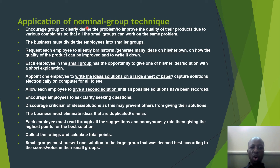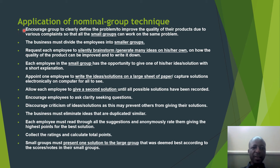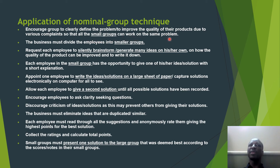The last technique is nominal group technique. Let's look at its application — how to use nominal group technique when intending to solve a problem. Step number one: encourage the group to clearly define the problem and how to improve the quality of their products due to various complaints, so that all small groups can work on the same problem. In this situation we are no longer following the brainstorming system but the nominal group technique, whereby the groups are small.